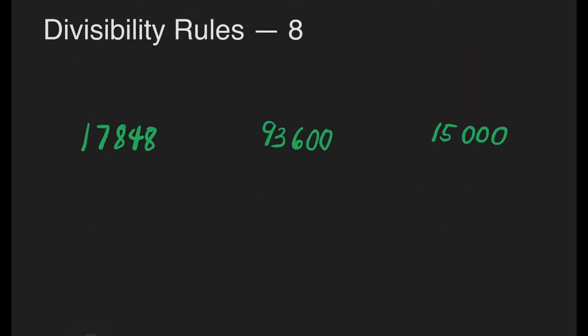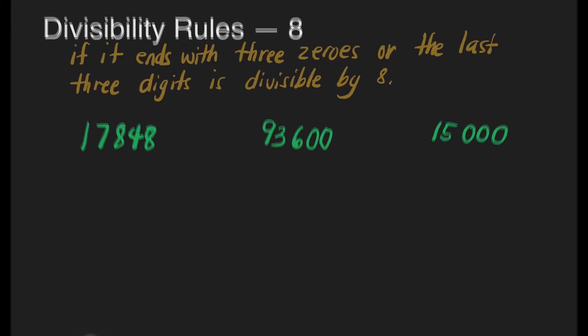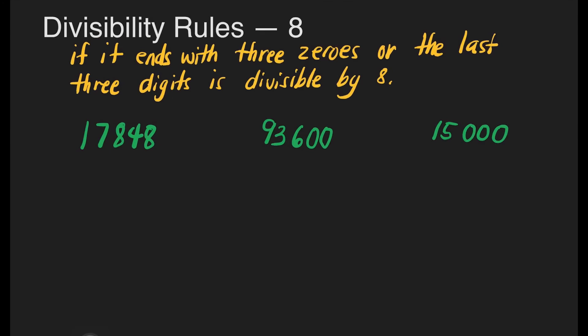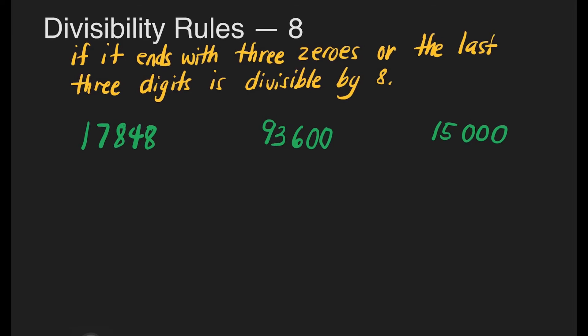Now let's have divisibility rules for 8. Which do you think among these numbers is divisible by 8? A number is divisible by 8 if it ends with 3 zeros, or the last 3 digits is divisible by 8. Let us check the first number.